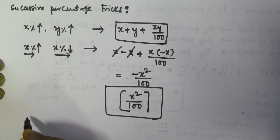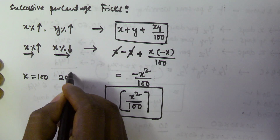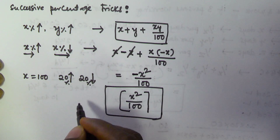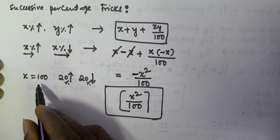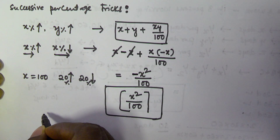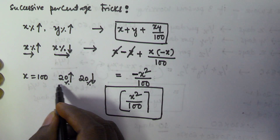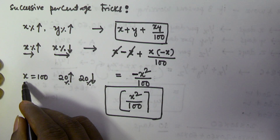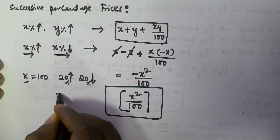Let us take the initial value as 100, and apply 20% increment followed by 20% decrement. After these two operations, what is the value of x? Whenever an equal percentage of increment and decrement are successively applied, the overall value is always decremented. We need to find how much it is decreased, and that value is given by x squared by 100.